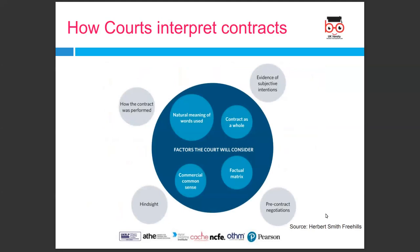Factors that courts will consider include: the natural meaning of the words, the contract as a whole, factual matrix, commercial common sense, how the contract was performed, evidence of subjective intentions, pre-contract negotiations, and hindsight. When looking at contract interpretation, there are broad principles rather than strict rules applied by the court. If a dispute arises as to what a contract means, the key point is to get the contract right and clear at the outset before signing. Having an understanding of the basics of contract interpretation will enable a person to ensure that contracts accurately reflect their intentions.